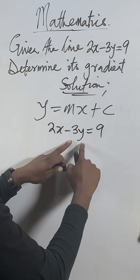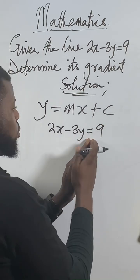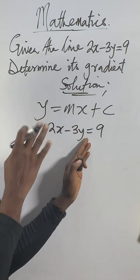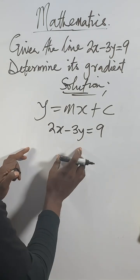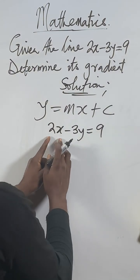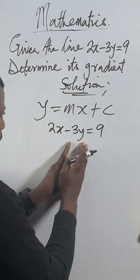Try to make sure y is on one side, then equal to every other thing on the other side. So what you will do now, as I see 2x there, I want to make sure y is alone.